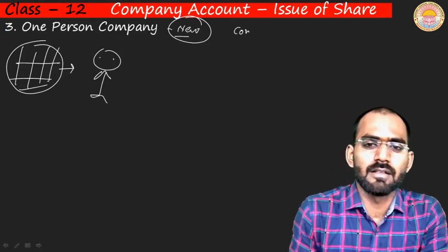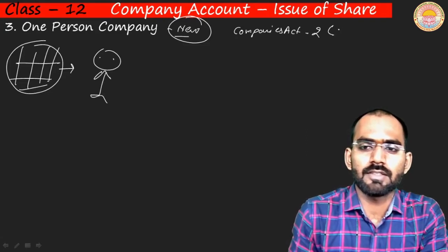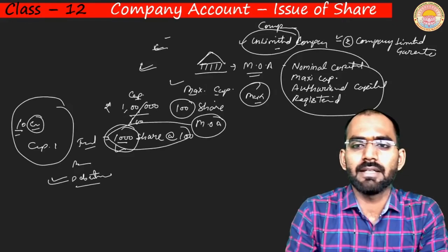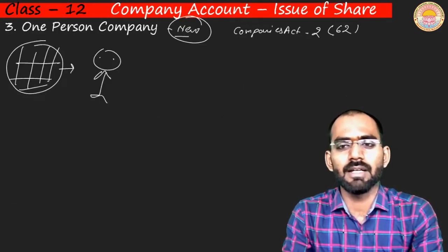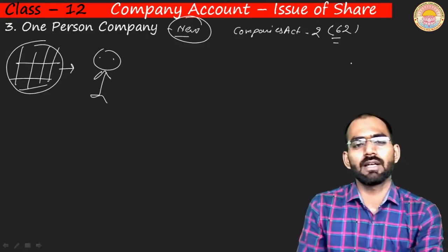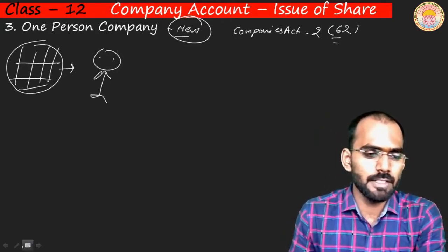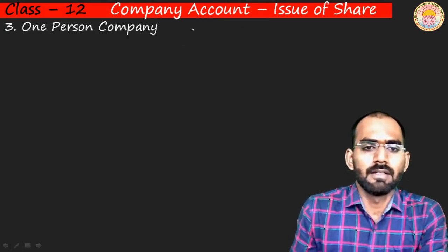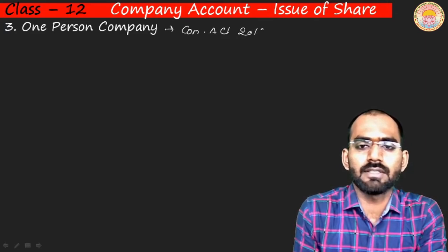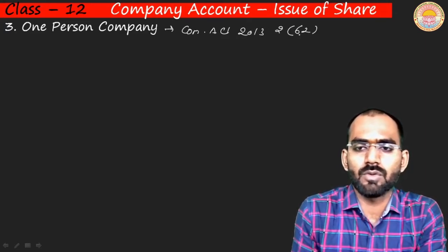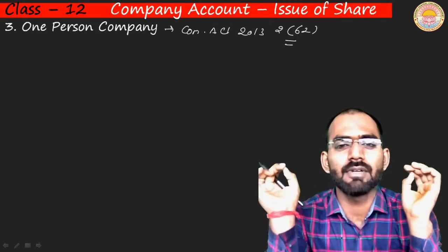The definition of one person company is given under Companies Act 2013, Section 2, sub-section 62. To recap: private company is under Section 2(68), public company under Section 2(71), and OPC under Section 2(62). A one person company is a company where there is only one shareholder or owner who introduces capital into the business and runs it.